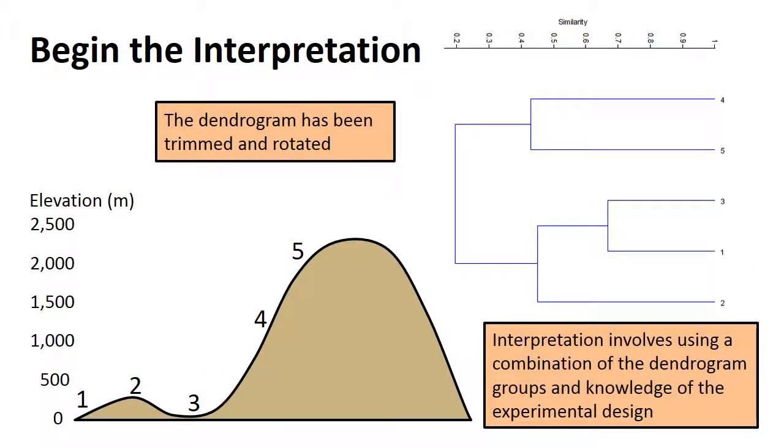The interpretation is going to use the dendrogram that was just produced. It also uses the experimental design. Recall that our experimental design was sites arranged on the mountain transect. The dendrogram, as you see it here, has been rotated so that it is in a more standard orientation.